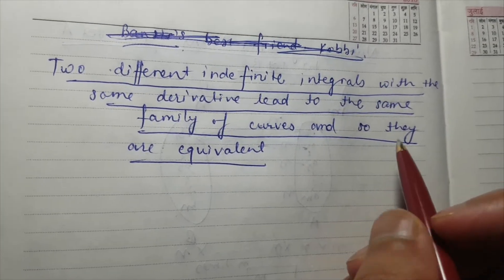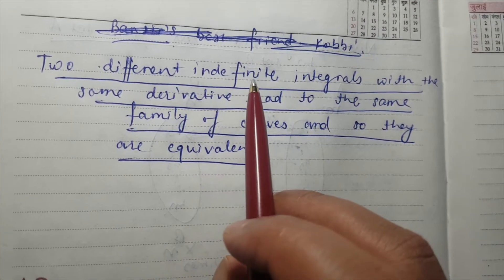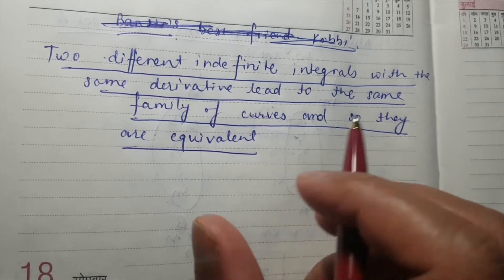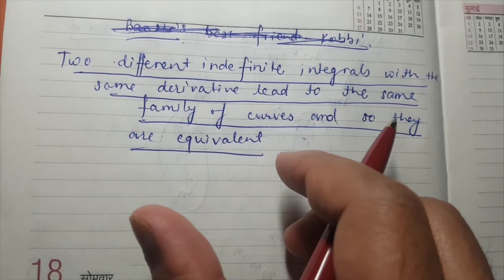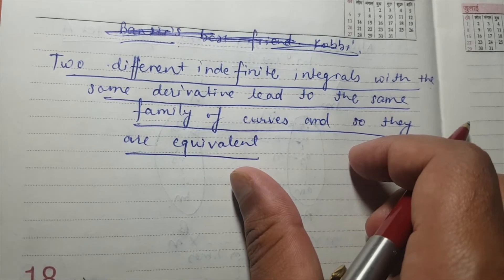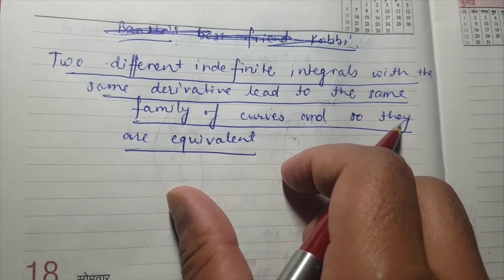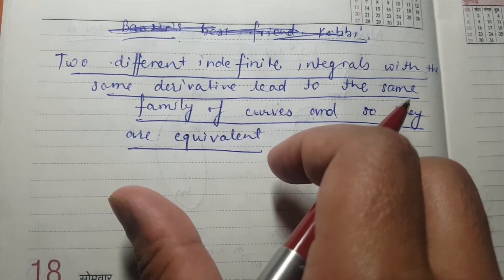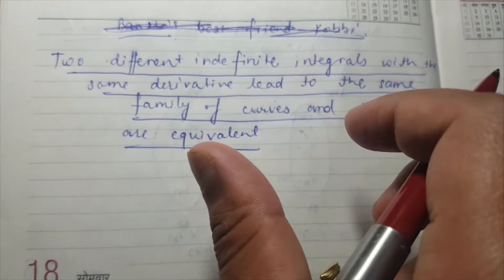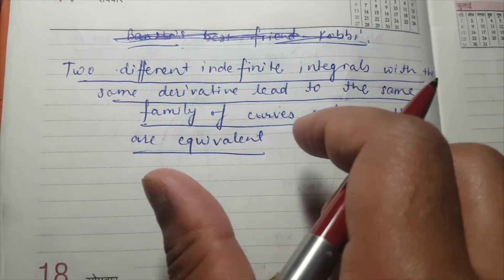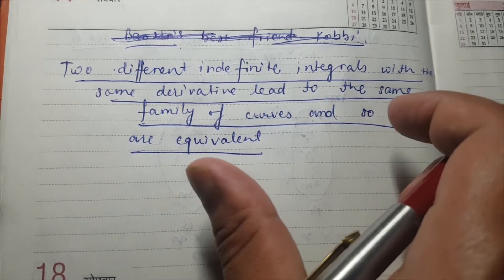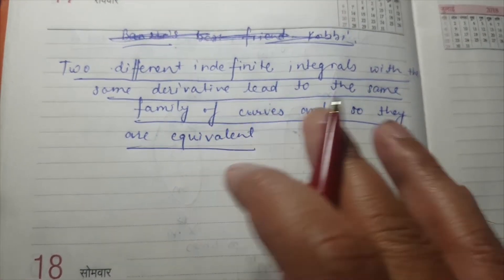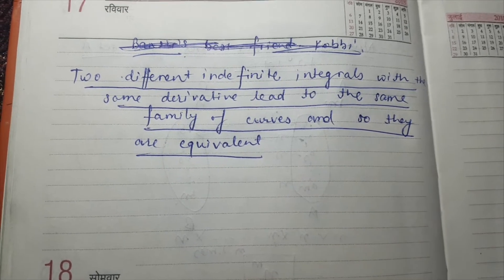Today's topic is: two different indefinite integrals with the same derivative lead to the same family of curves, and so they are equivalent. What this means is that if we have two different indefinite integrals, and if the derivatives of both are the same, then we have to prove that those integrals represent the same family of curves.